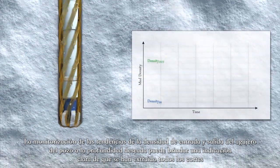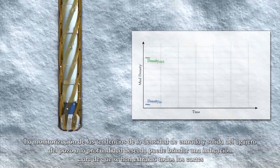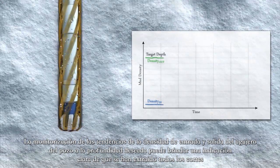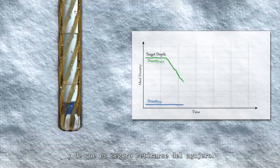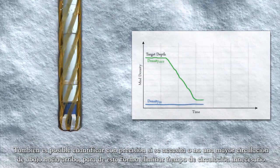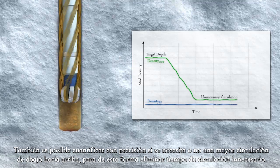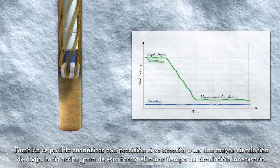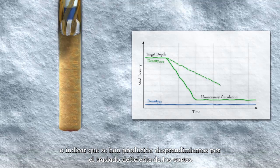Monitoring density trends in and out of the wellbore at target depth can provide a clear indication that all cuttings have been removed and it is safe to pull out of hole. It's also possible to accurately quantify if circulating more than bottoms up is necessary or not, removing unnecessary circulating time, or providing an indication of sloughing due to poor cuttings transport.